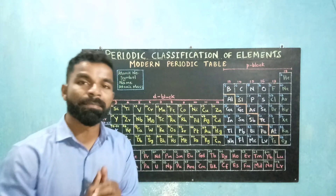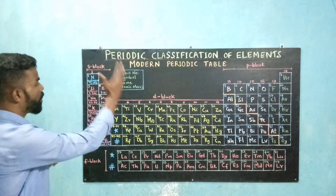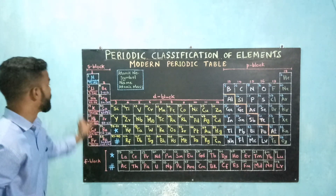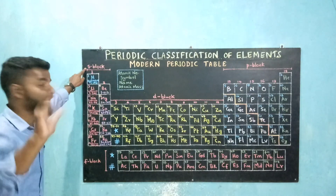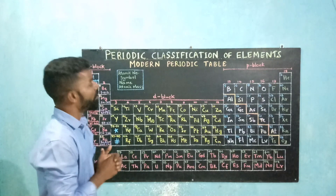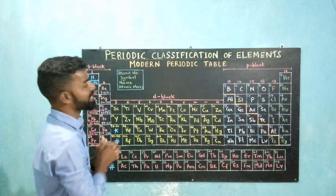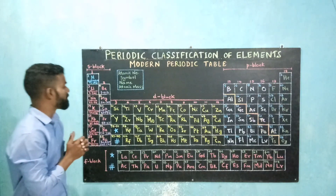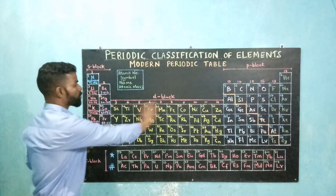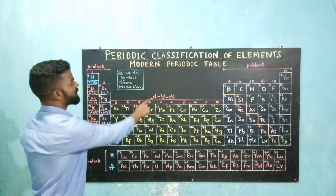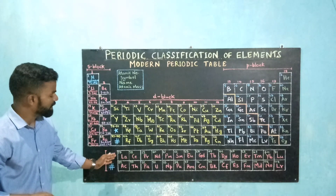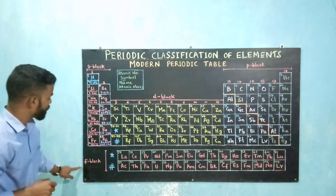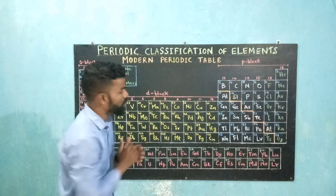The modern periodic table can be divided into 4 blocks: S block, P block, D block, and F block. The S block has elements placed in group 1 and group 2. The P block is formed by elements from group 13 till group 18. The D block is formed by elements from group 3 till group 12. The F block contains the elements of the lanthanide and actinide series. A zigzag line can be drawn in the P block of the modern periodic table.